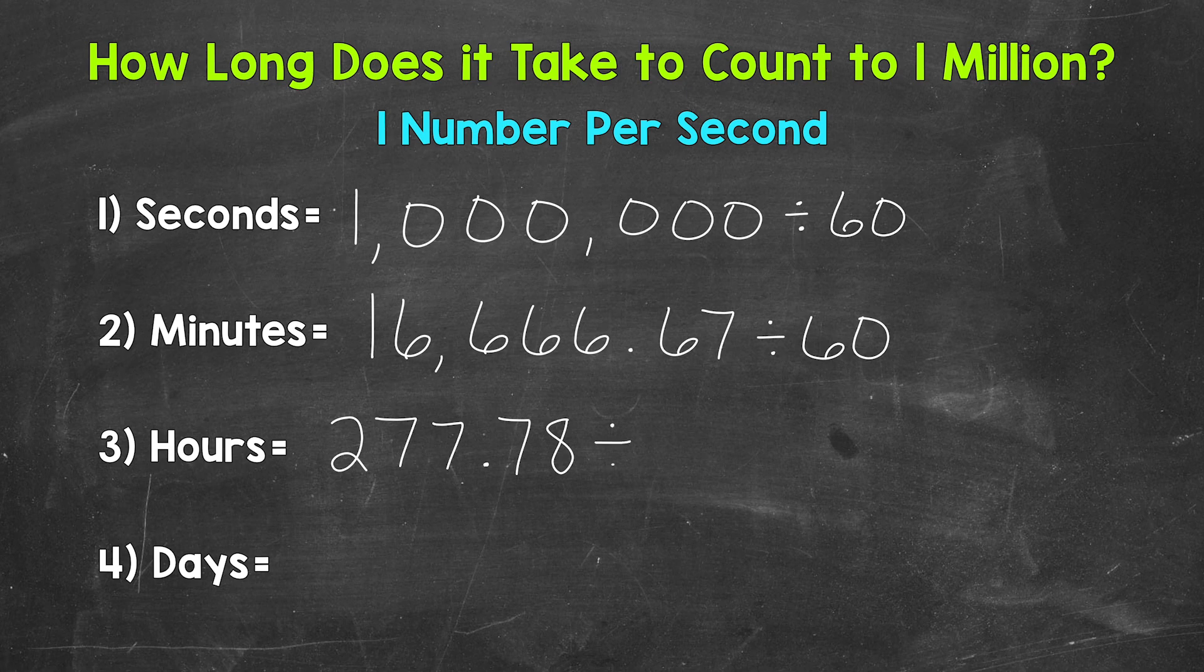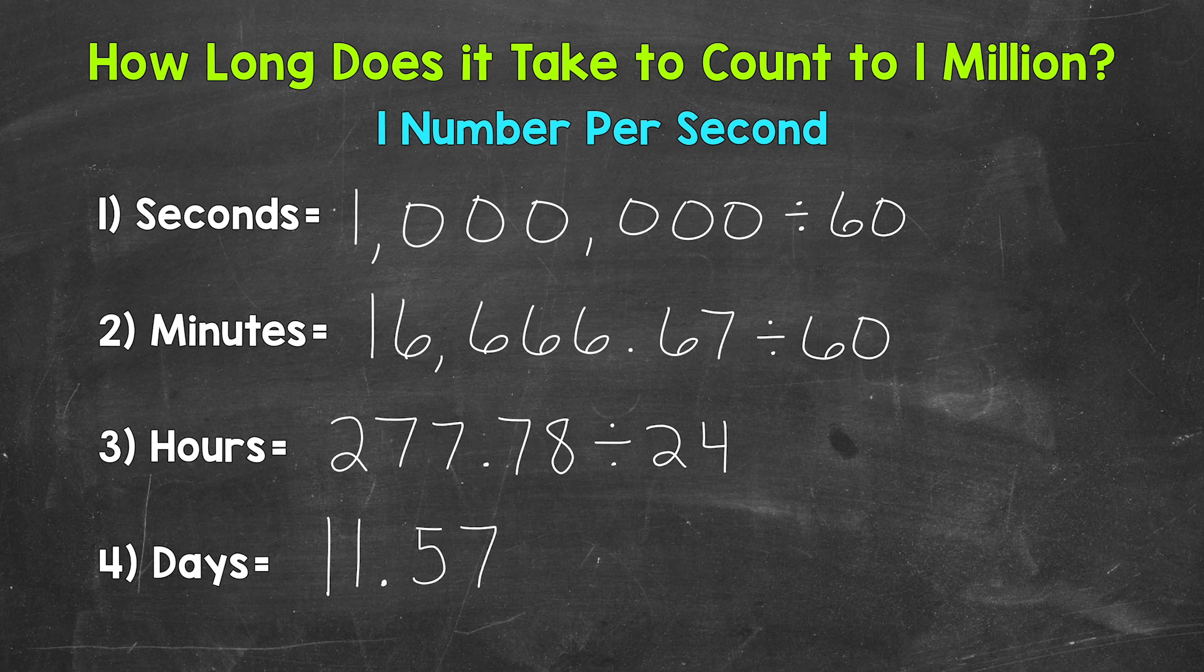So again, we are going to divide by 24. That gives us 11 and 57 hundredths. And that decimal was also rounded to the hundredths place.